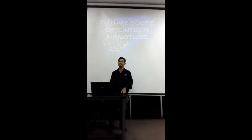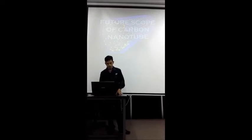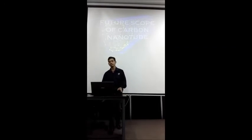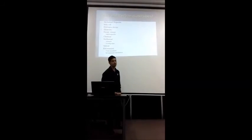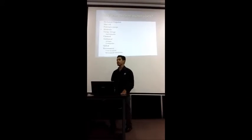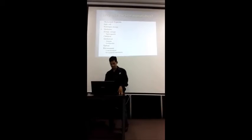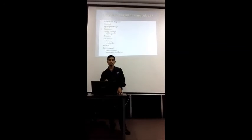I am going to present my part of the mini project, which is the future scope of carbon nanotubes. Recent nanotechnology is widely used in most scientific research circles because there are many properties that can be improved by using nanotechnology. One example of nanotechnology is carbon nanotubes. We use carbon nanotubes because they can improve properties as shown in this slide. For example, CNTs can improve mechanical properties in material composites such as polymers, semiconductors, and metals.